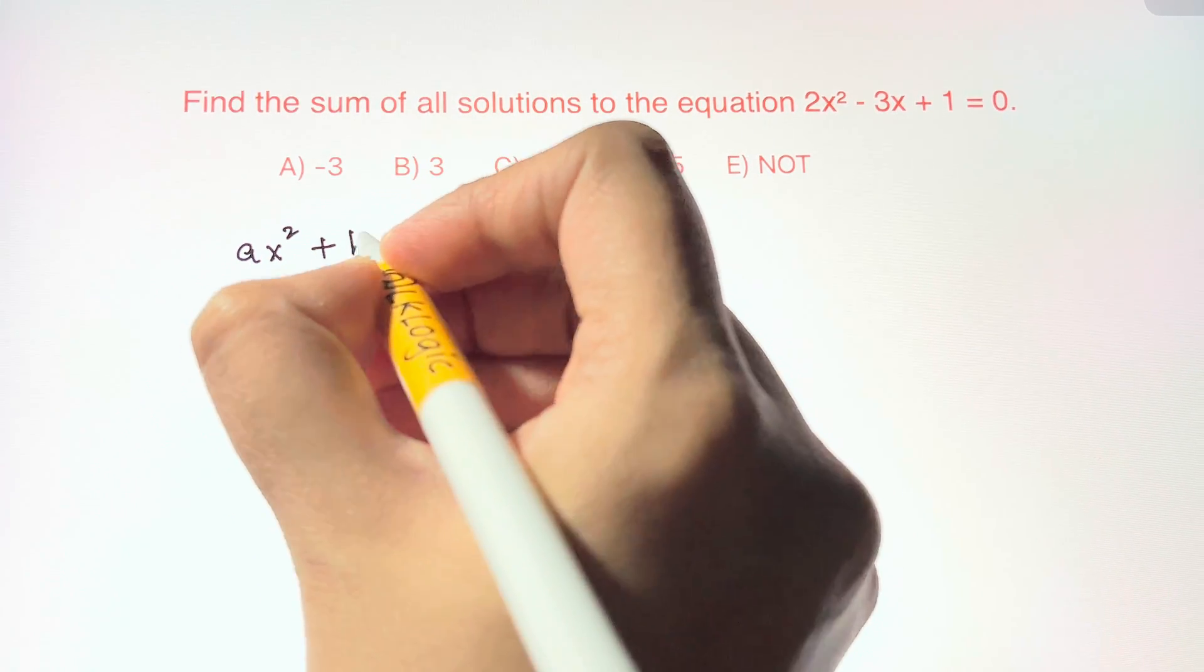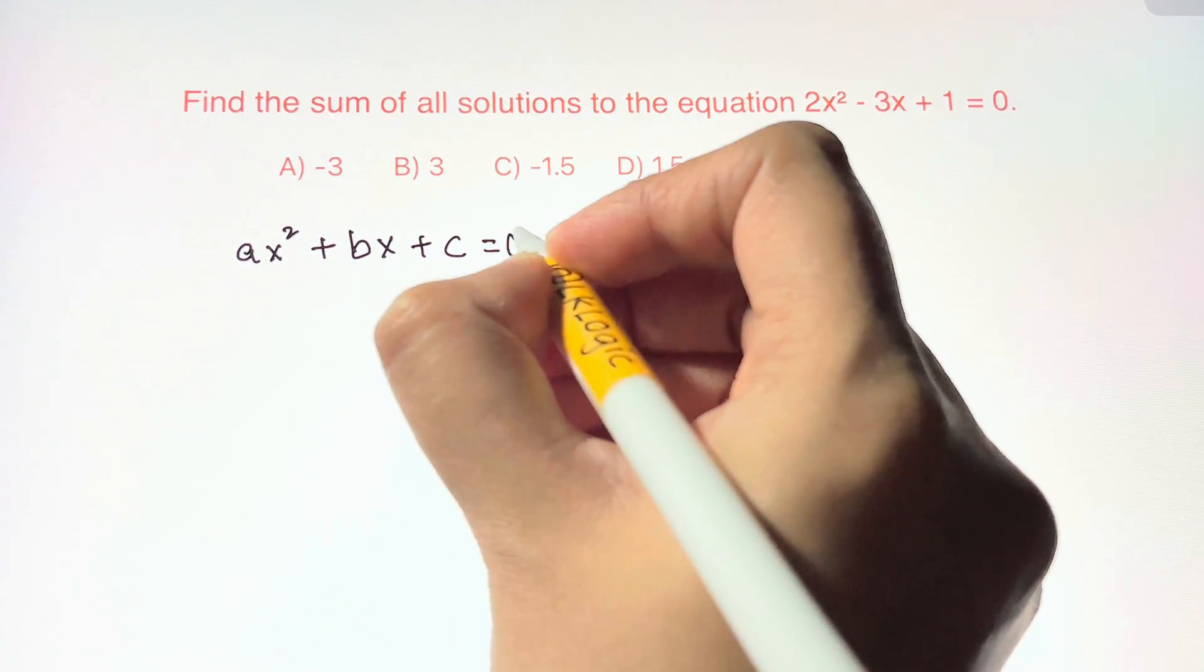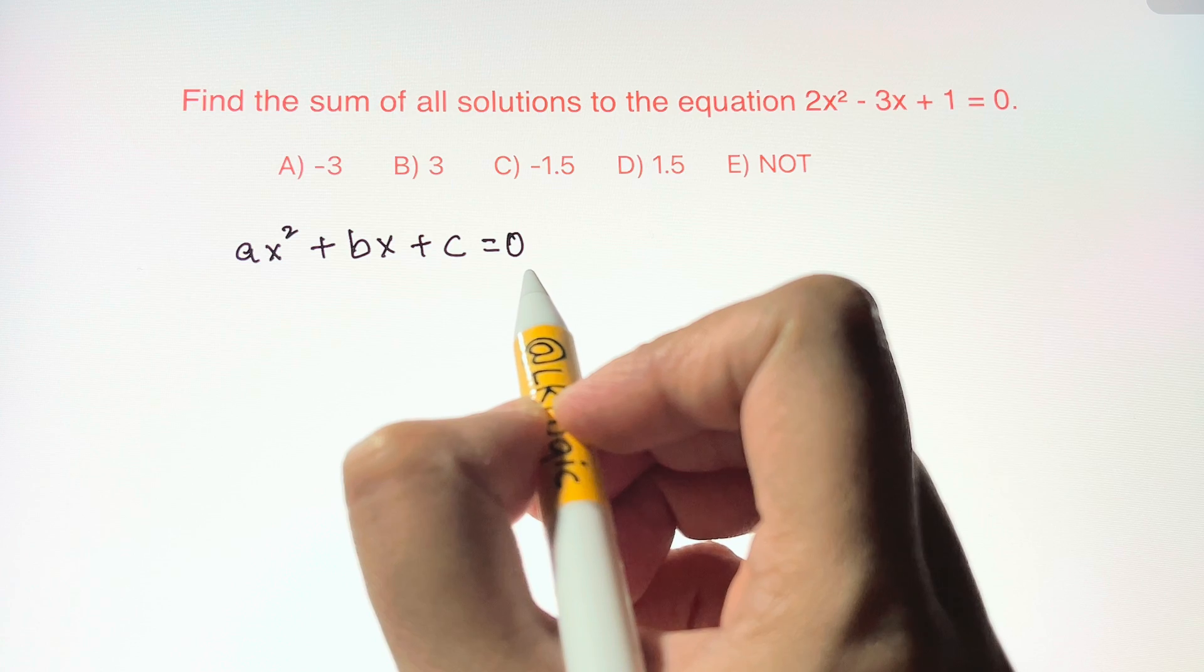This is the general form of the quadratic equation ax² + bx + c = 0, right?